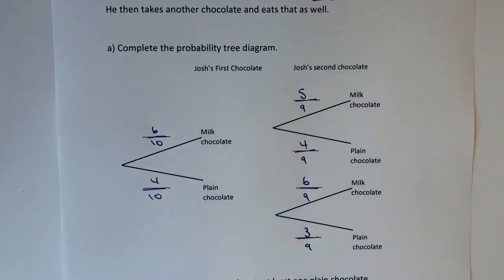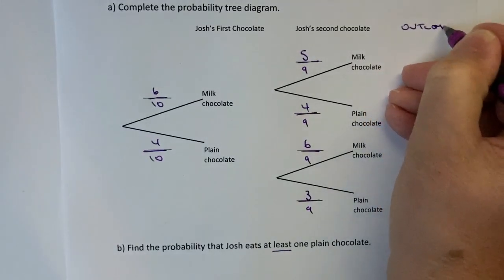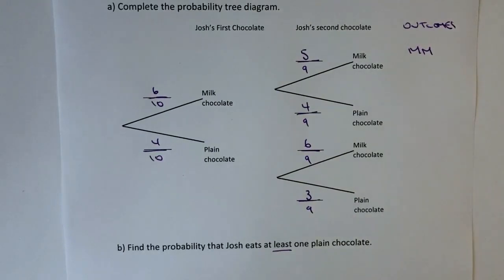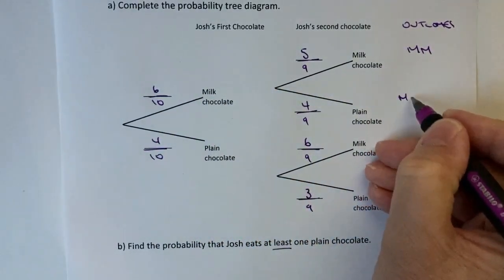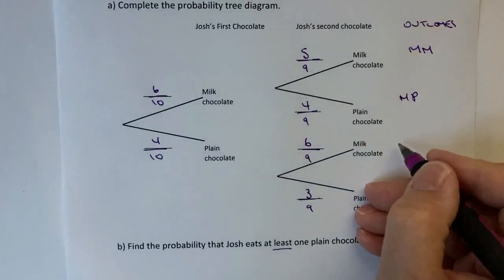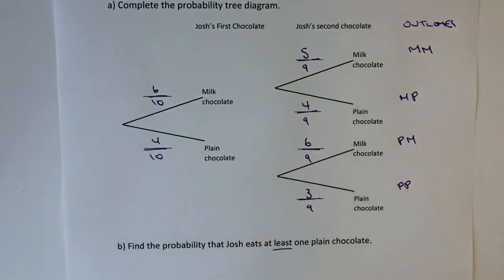The next question deals with finding the probability that John eats at least one plain chocolate. Let's have a look at the outcomes. The first time round he had milk and then milk again — we're not actually interested in that one. We're only interested in the ones where he's had at least one plain chocolate: milk then plain, plain then milk, or plain then plain. Those are the four possible outcomes, and if you've drawn your diagram like this then hopefully you should be able to follow the branches through.